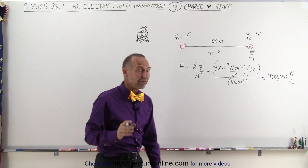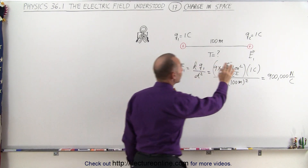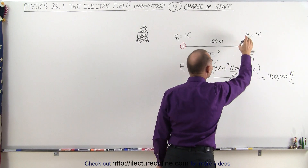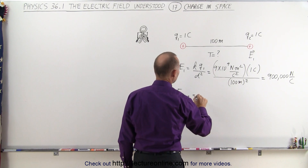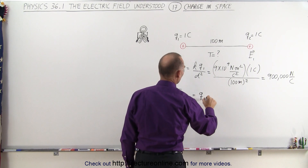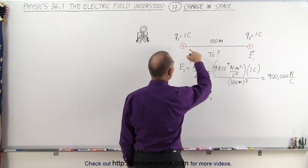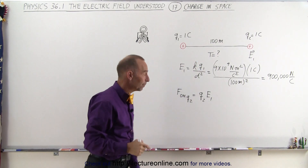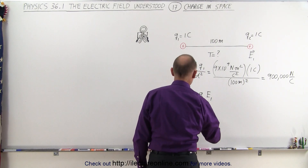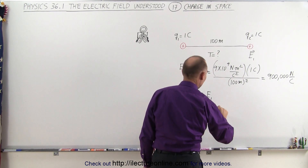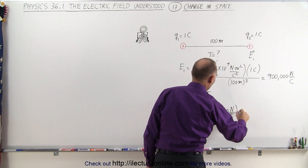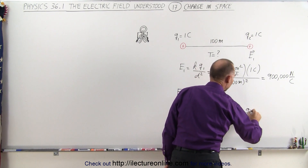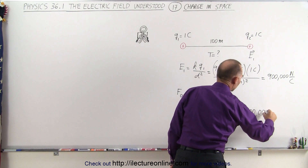So now we're going to find the force experienced by this charge by placing it inside that electric field. The force on Q2 is going to be equal to Q2 times the magnitude of the electric field caused by Q1. So in this case that would be equal to 1 Coulomb multiplied times the electric field which is 900,000, giving us 900,000 Newtons.